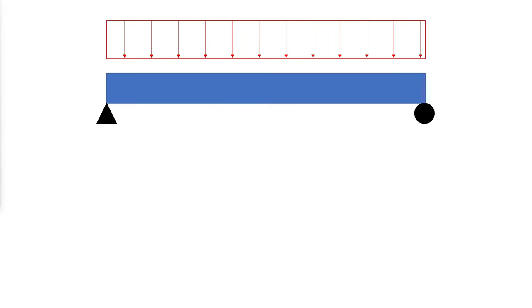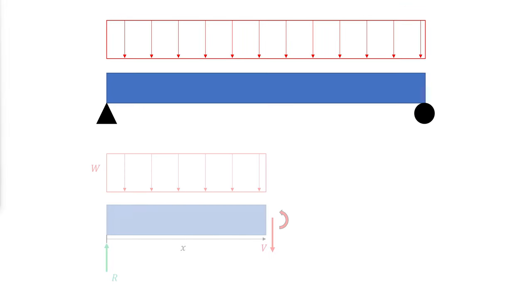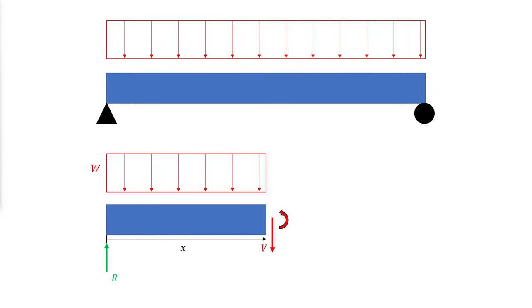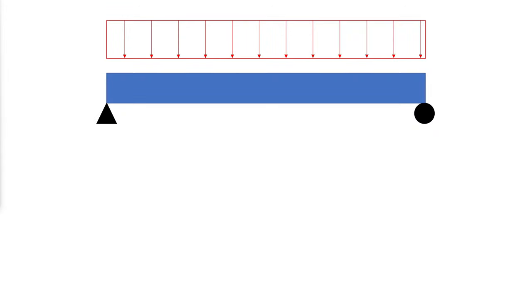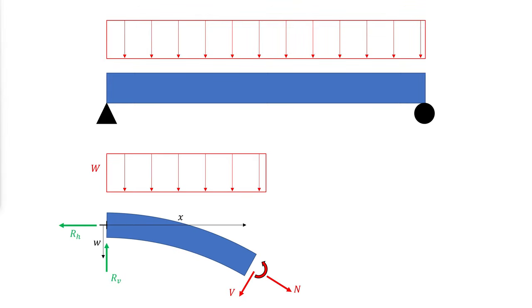In a simply supported straight beam, when conducting a first-order analysis, the moment is evaluated by checking for equilibrium in the undeformed geometry. When conducting a second-order analysis, the moment is evaluated by checking for equilibrium in the deformed geometry.